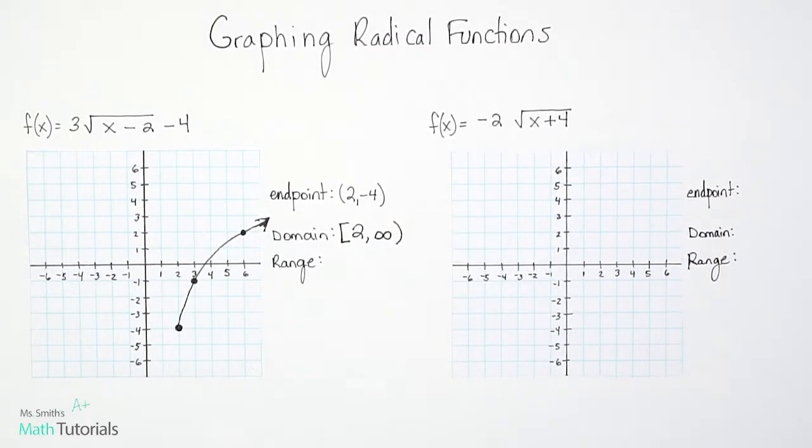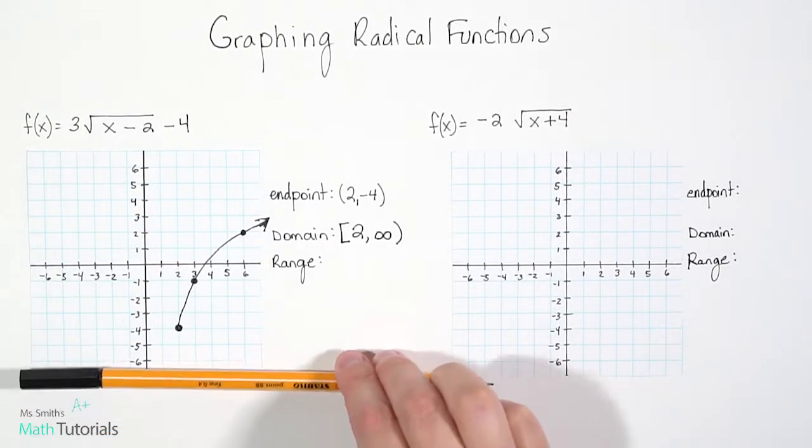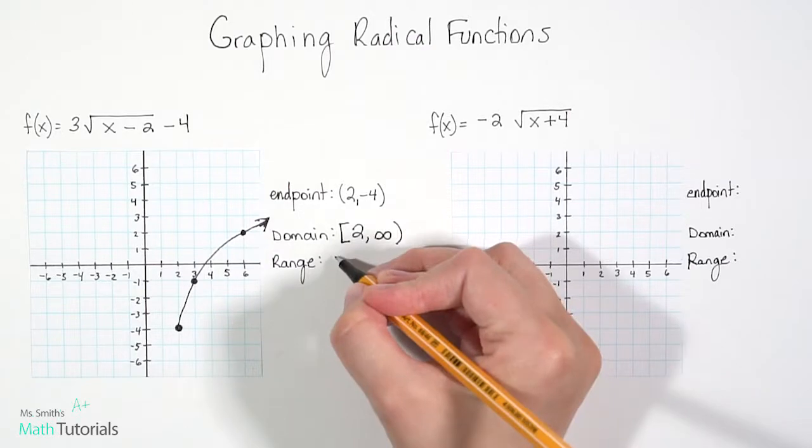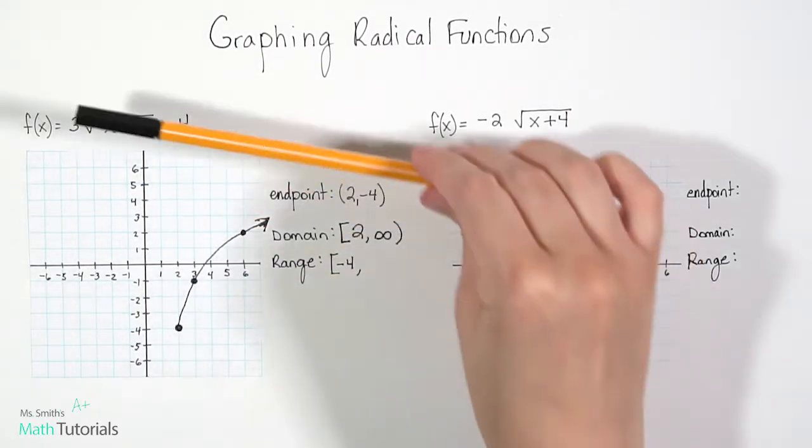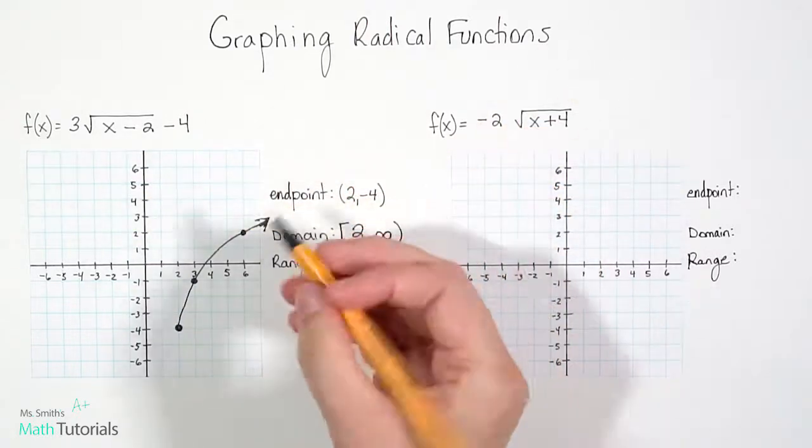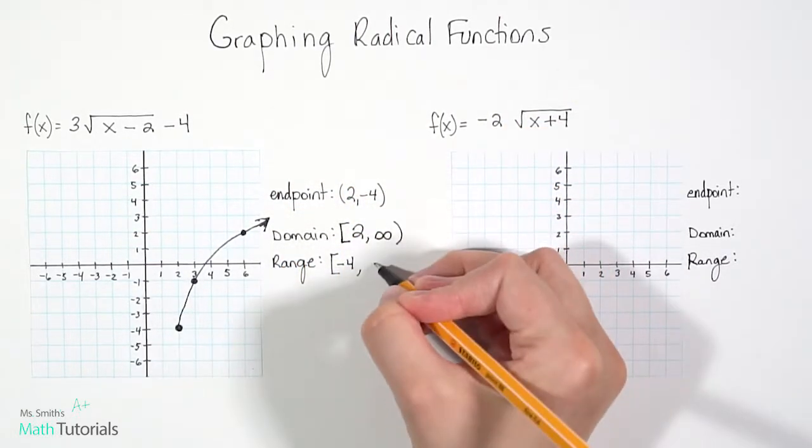To find range, remember that's our y, and we move from bottom to top. So from the bottom, the first place I hit is negative 4. And again, that's a solid point, so it gets a bracket. And when I move from the top down, the first place I hit is an arrow, and an arrow means positive infinity.